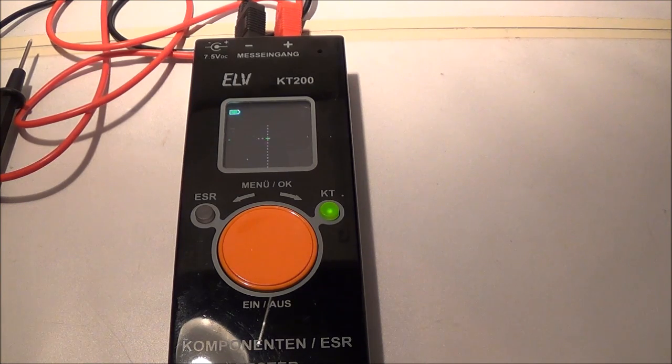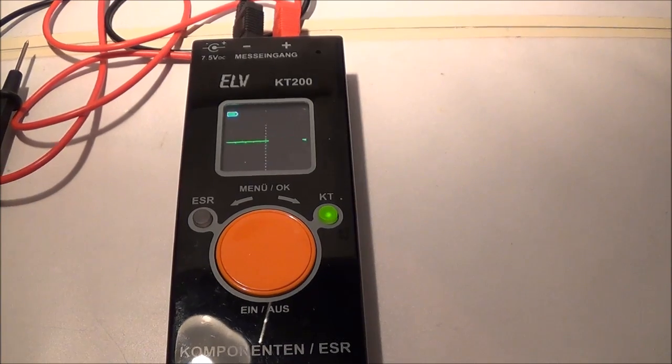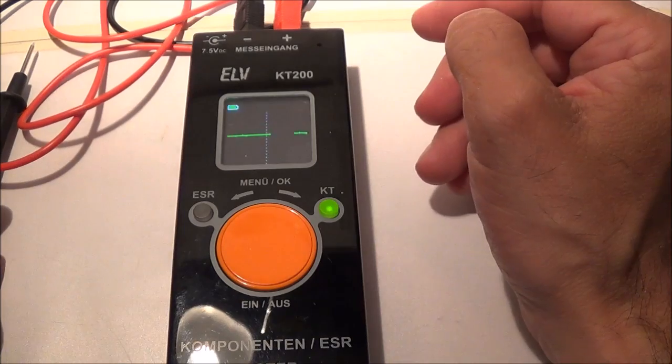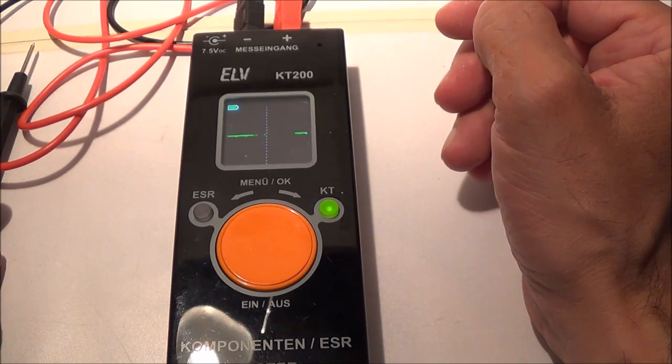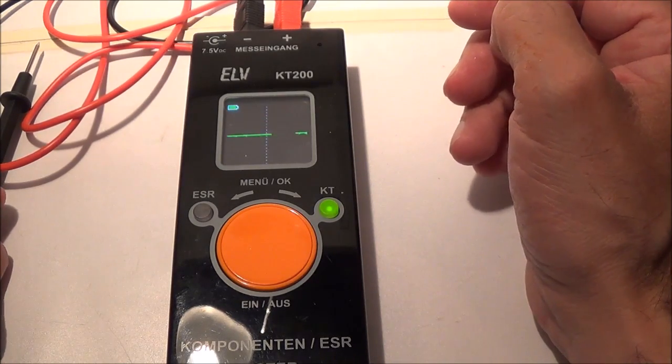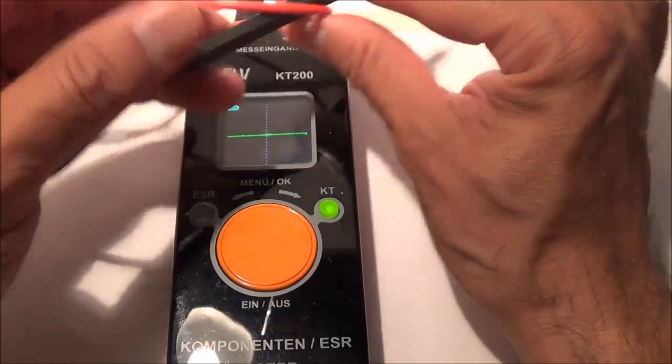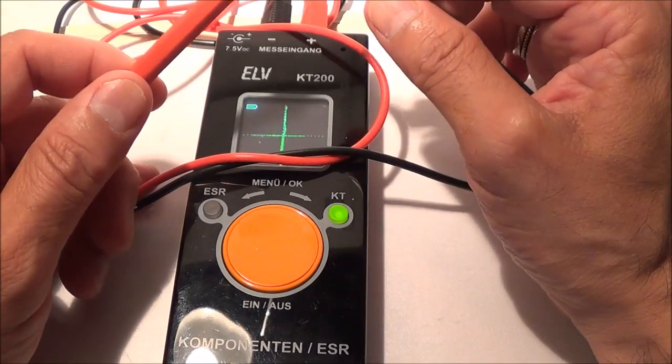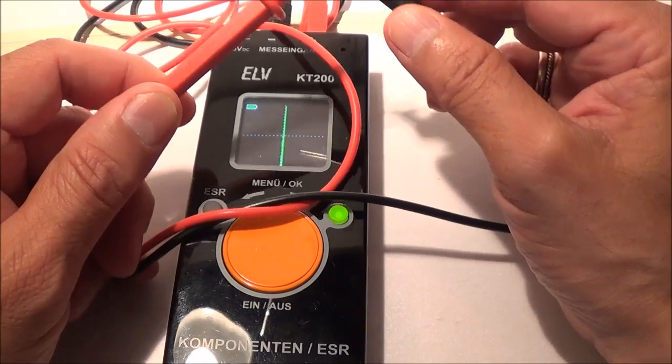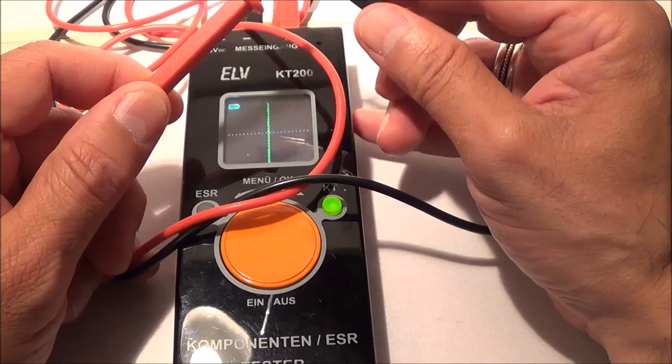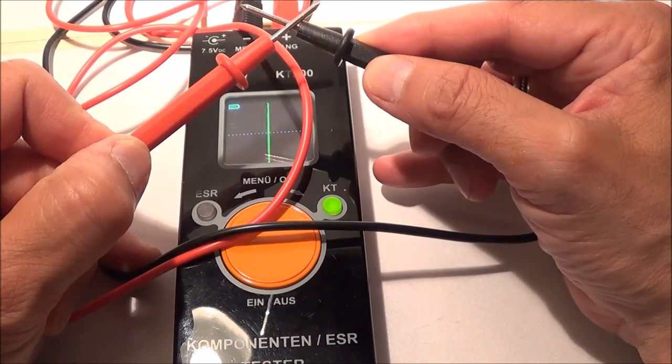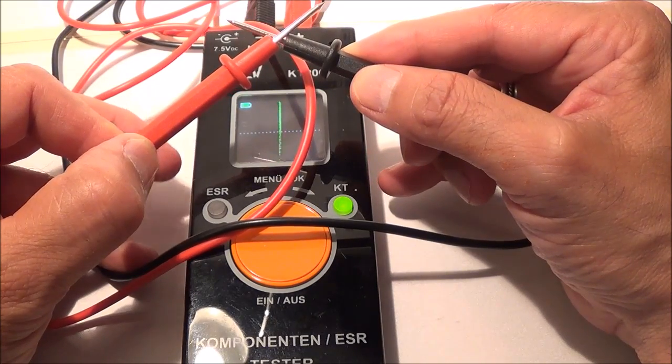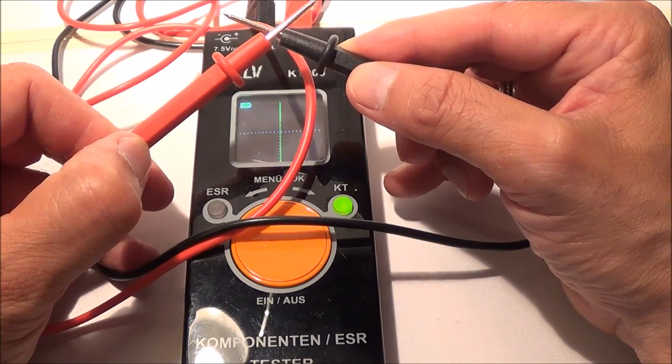So I'm going to start with the basics here. What you're seeing is a straight horizontal line and that means it's an open. When I short the leads together it's showing a short. You'll have a vertical line straight up and down. I'm going to try out some different resistors now.